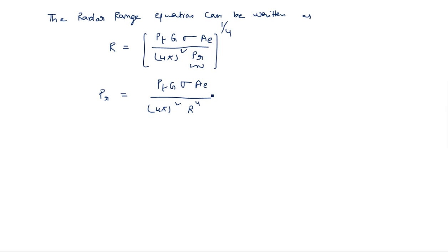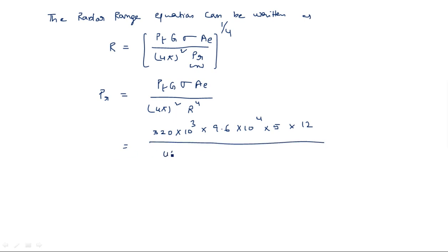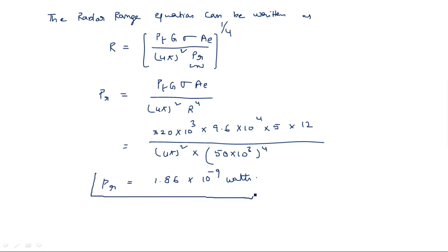Now substituting the given values: Pt = 320 × 10³ W, G = 9.6 × 10⁴, σ = 12 m², Ae = 5 m², divided by (4π)² × (50 × 10³)⁴. Simplifying this gives the received power as 81.86 × 10⁻⁹ watts. That is the received power for this problem.